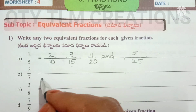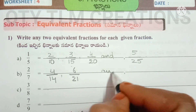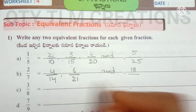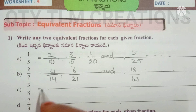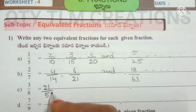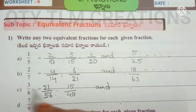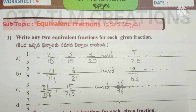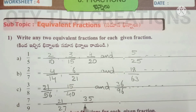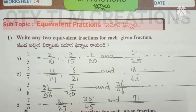For 2/7: multiply by 2 to get 4/14, by 3 to get 6/21, and by 9 to get 18/63, and so on. For 3/8: multiply by 7 to get 21/56, by 5 to get 15/40, and by 12 to get 36/96. For 7/9: multiply by 3 to get 21/27, by 5 to get 35/45, and by 13 to get 91/117.